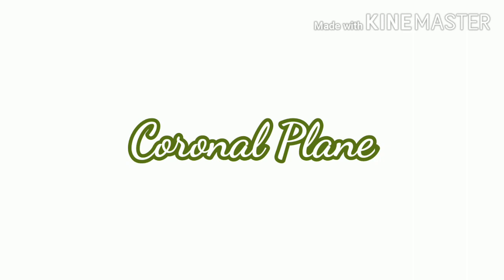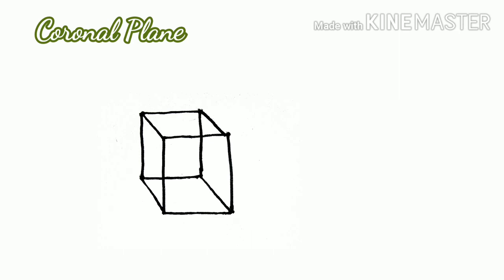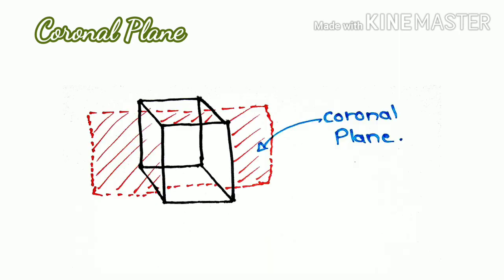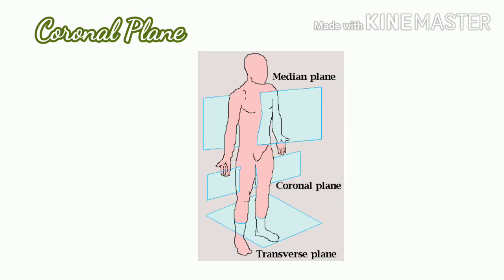The third comes the coronal plane: a plane at the right angle to median or mid-sagittal plane, dividing the body into anterior and posterior parts. Suppose this 3D box as a body. If I make a cut such that this box will be divided into the front part, that is anterior, and a back part, that is posterior, then such division of plane is called coronal plane.